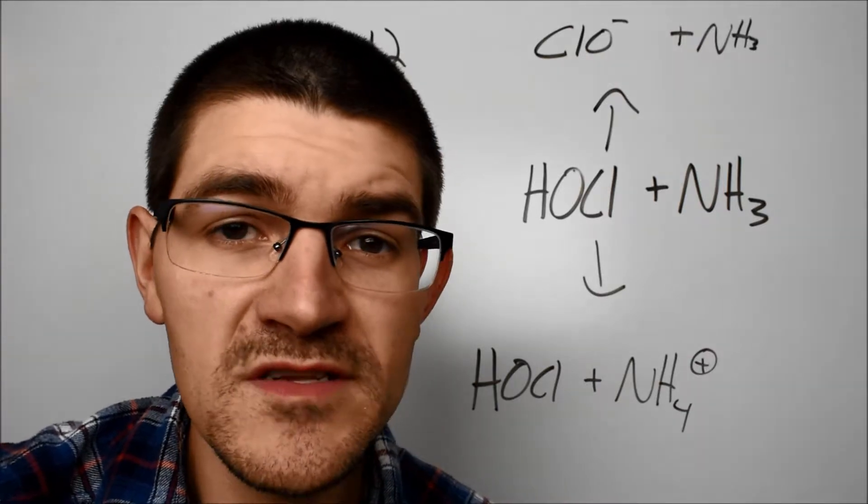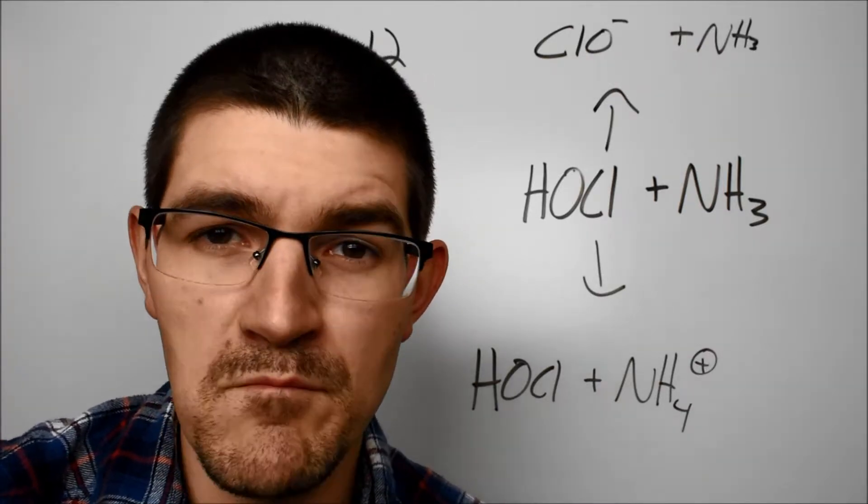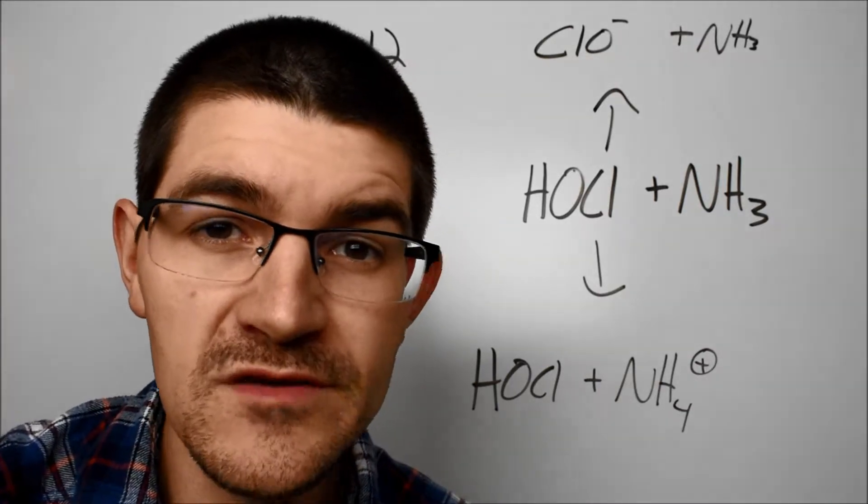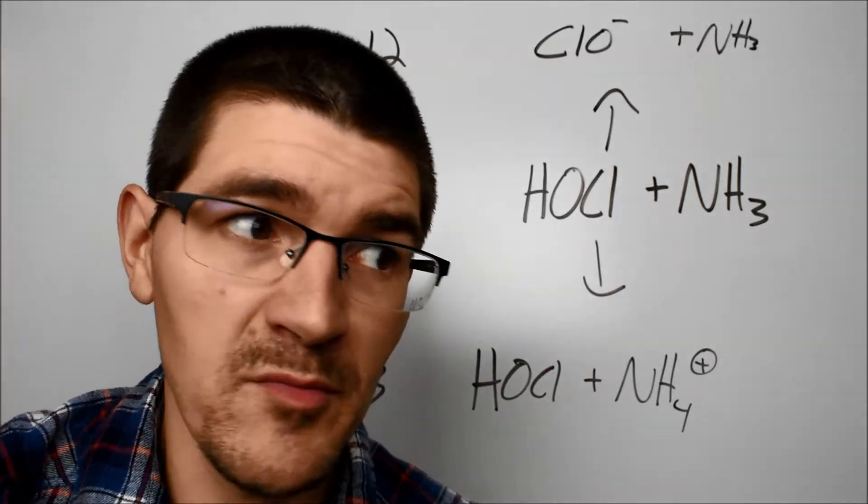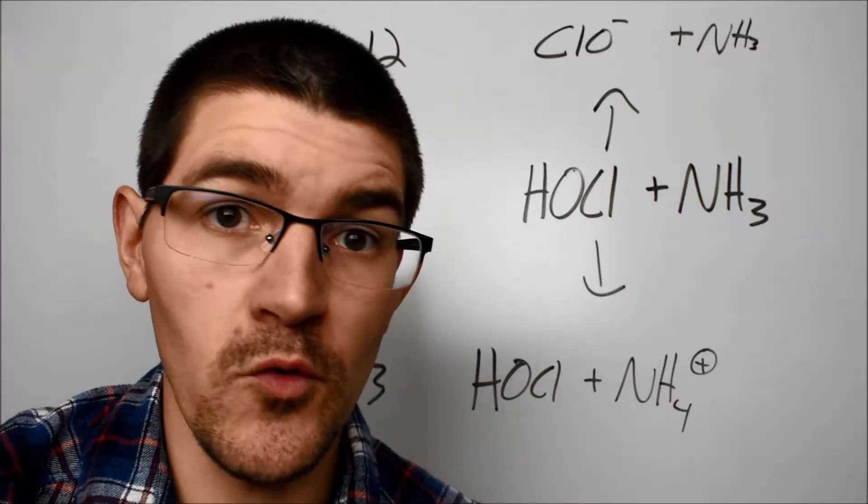In practice, because ammonia is a weak base, we're probably going to be in that middle ground pH of 8 or 9 region for this reaction. For us to get outside of that, too high or too low, we're probably adding something else in there, and that of course complicates matters.